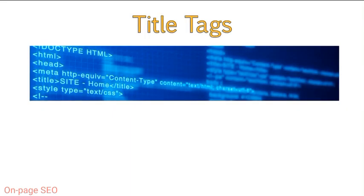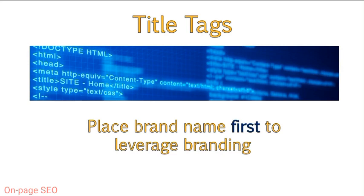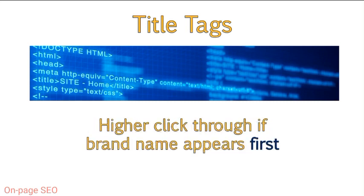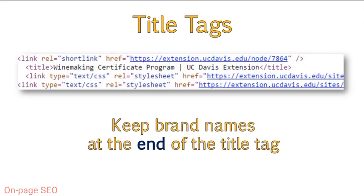There are some instances where it would be recommended to place brand name first, mainly when the company really wants to leverage their branding. If it's a very well-known brand, they might see a higher click-through if the brand name comes before the description. However, if you have a small, less well-known brand, the best solution is keeping it at the end. For the most part, even for well-known brands, we generally recommend placing the name last. Unless the company is really concerned with branding, I suggest keeping the brand at the end of the title tag.